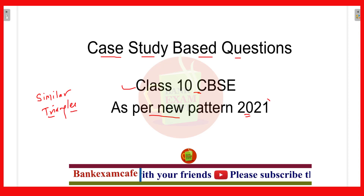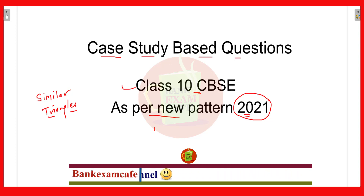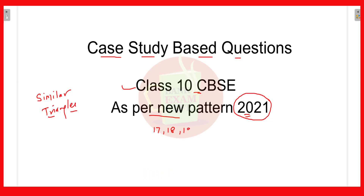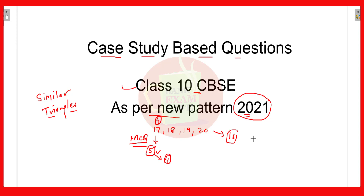For the examination 2021, CBSE has decided to ask case study based questions and question numbers 17, 18, 19 and 20 will be on case study based questions. Each question will have 5 sub questions and out of those 5 you have to solve any 4, meaning there will be an option of 1 question. Each question will be of MCQ type and carry 4 marks, so in all there will be 16 marks for the case study based questions. This topic has become most important as far as the CBSE exam 2021 is concerned.